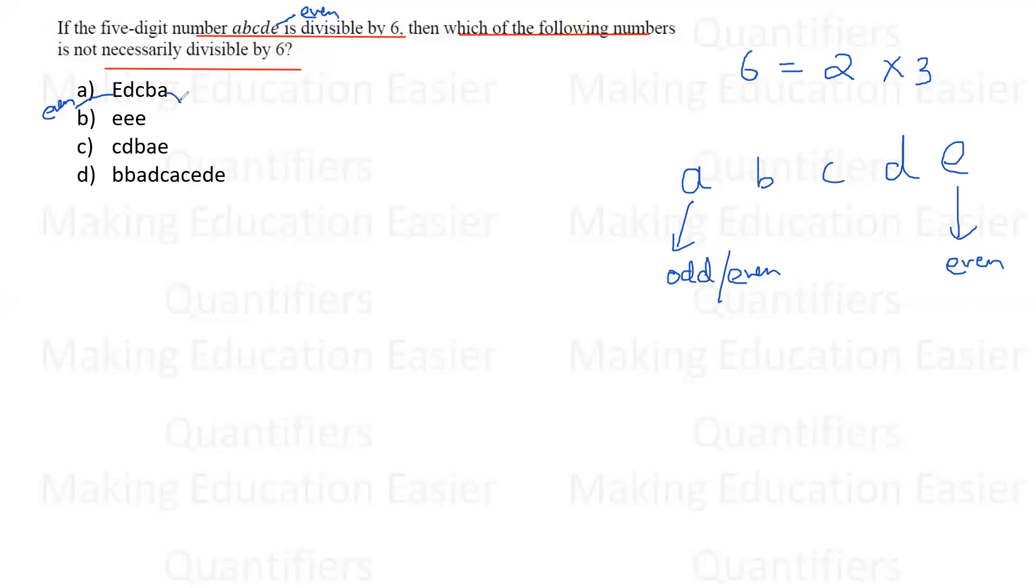But again, A can be odd. Now students, if A is odd, agar A odd hai, toh matlab last wala digit odd hai, toh wotoh two se toh divide hi nahi ho ga. Toh agar two se nahi divide ho ga, toh six se divide nahi ho sakta. Right? Because any number which is a multiple of six will definitely be a multiple of two. Toh jab two ka multiple hi nahi hai, number hi odd hai, toh six ka multiple toh nahi ho sakta.